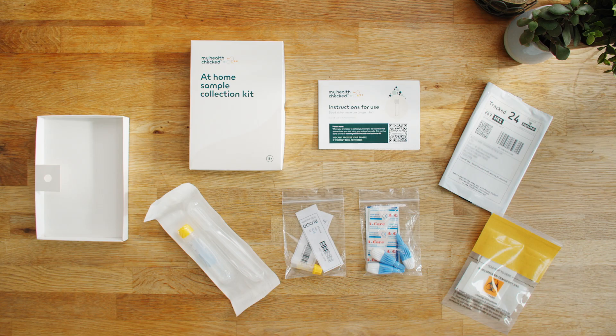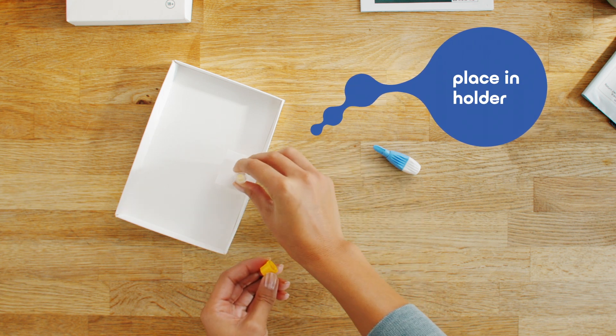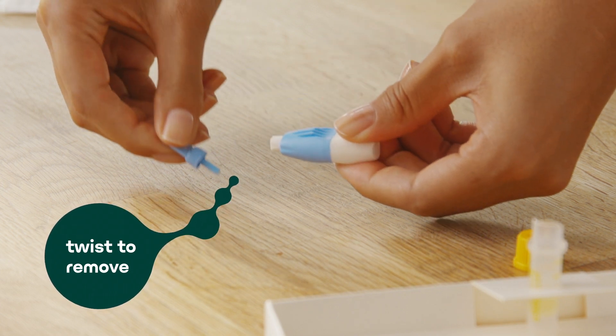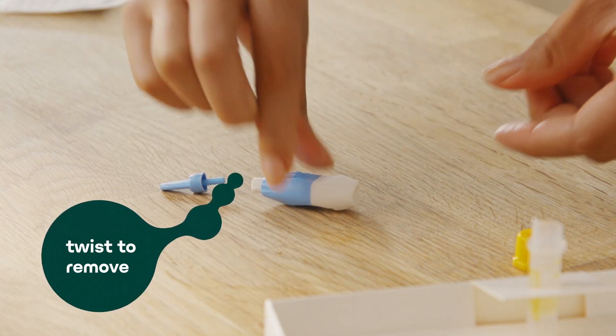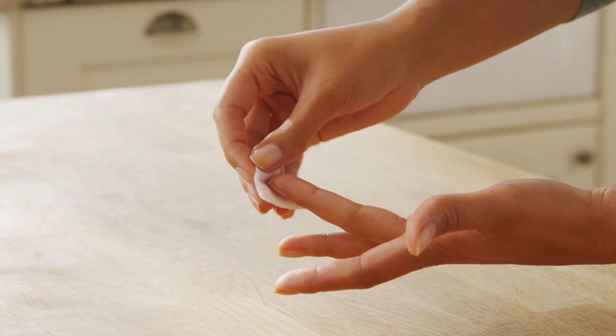You are now ready to begin your sample collection. Remove the cap and place the tube into the circular cutout provided. Twist the lid of one of the safety lancets to remove it. Using the alcohol wipe, clean the tip of your chosen finger and allow it to dry.